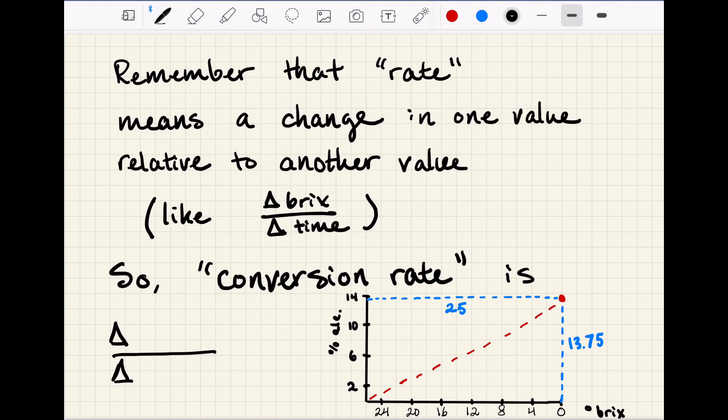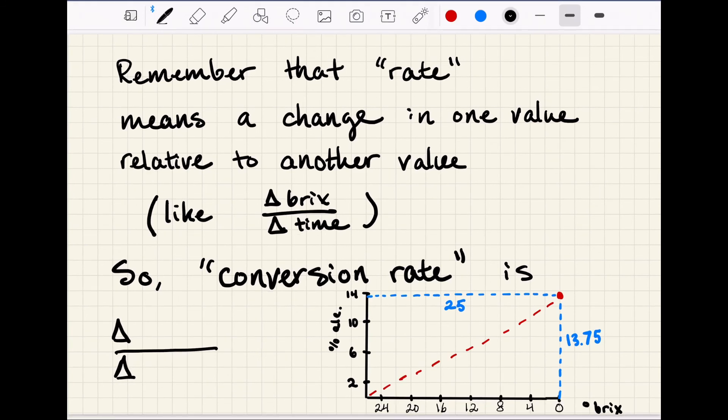And bringing this full circle back to our terminology around rates, a conversion rate for sugar to alcohol is just the change in one value relative to the change in another value. We can look at it graphically and calculate our slope by setting up a fraction like this for a rate of 0.55.